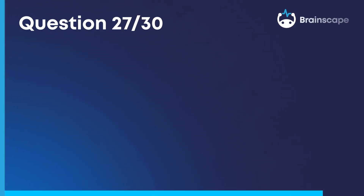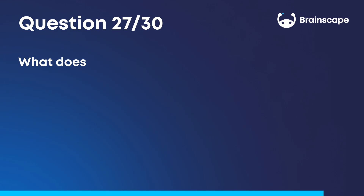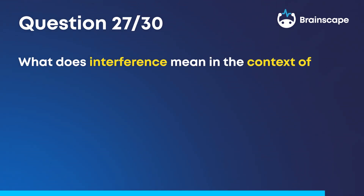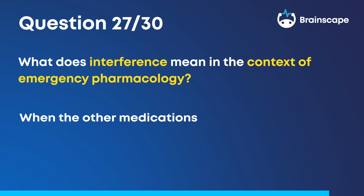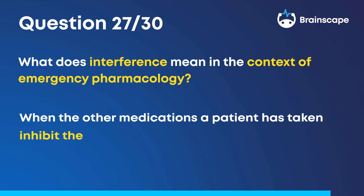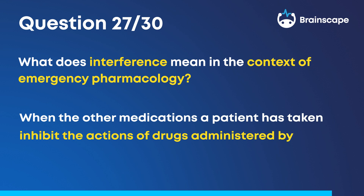Question 27. What does interference mean in the context of emergency pharmacology? Interference occurs when the other medications a patient has taken inhibit the actions of drugs administered by the paramedic.